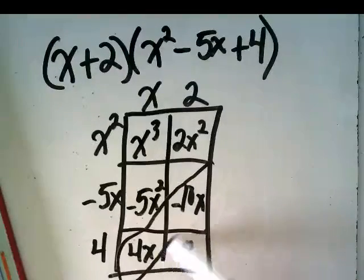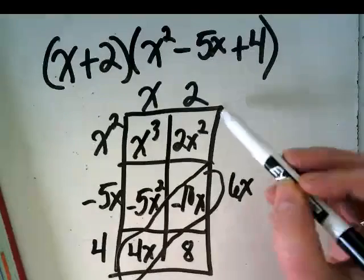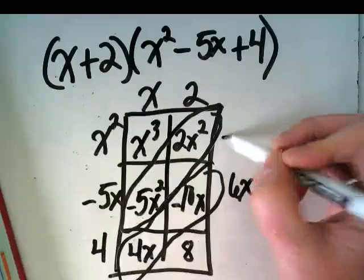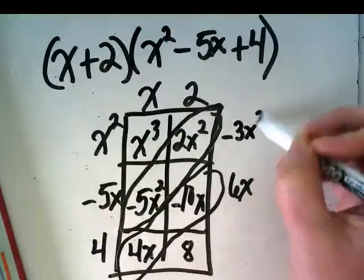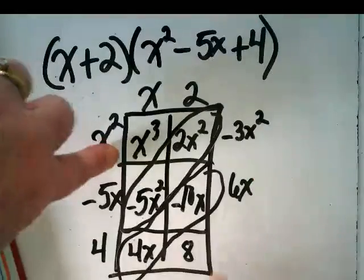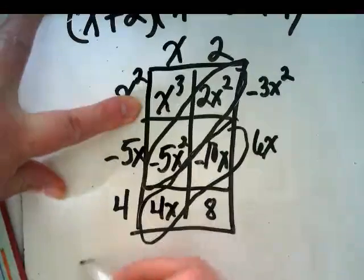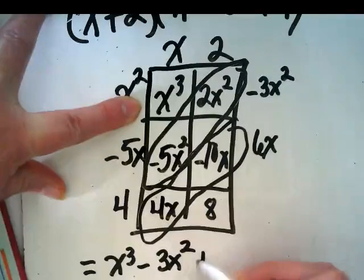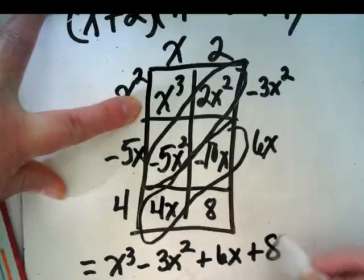Negative 10x and 4x would give us 6x. 2x² and negative 5x is going to give us negative 3x². And we have this term and this term. So what does this whole thing equal? x³, minus 3x², plus 6x, plus 8.